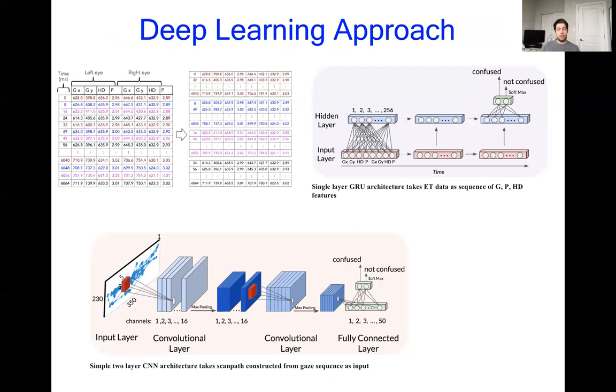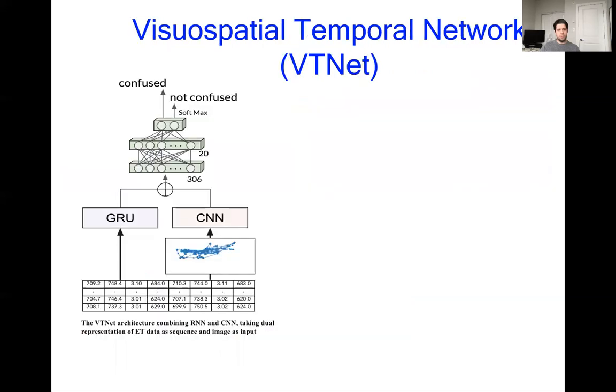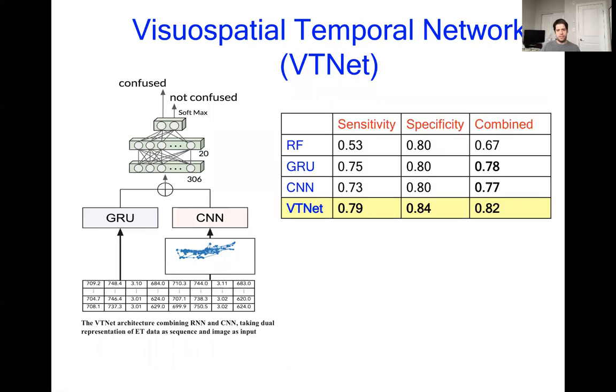Given these two methods now, the RNN to process the sequence numerically and the CNN to process the gaze sequence pictorially, we then combine them into a single model called the visual spatial temporal network, VT net for short. This has the GRU processing the raw sequence, the CNN processing the picture scan path, and we take the hidden state of the GRU, which is a 256 element vector, and the output of the last convolutional layer into a 50 element vector. We concatenate these and process them through a simple two layer neural network to classify the examples confused or not confused. This is trained as a single unit and we found that this gave us our best results overall.